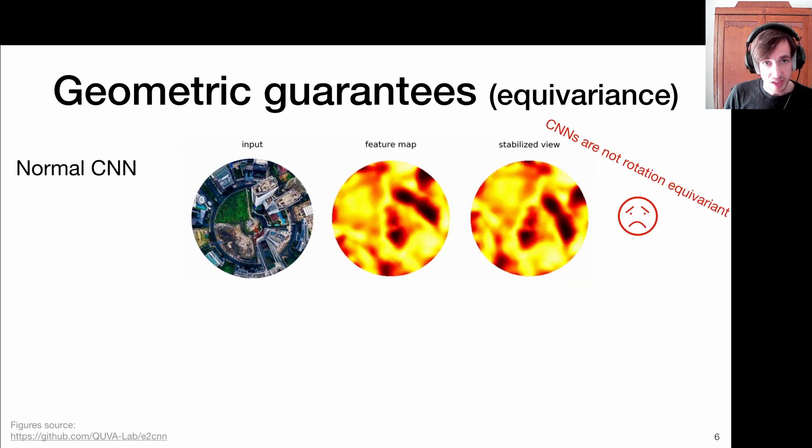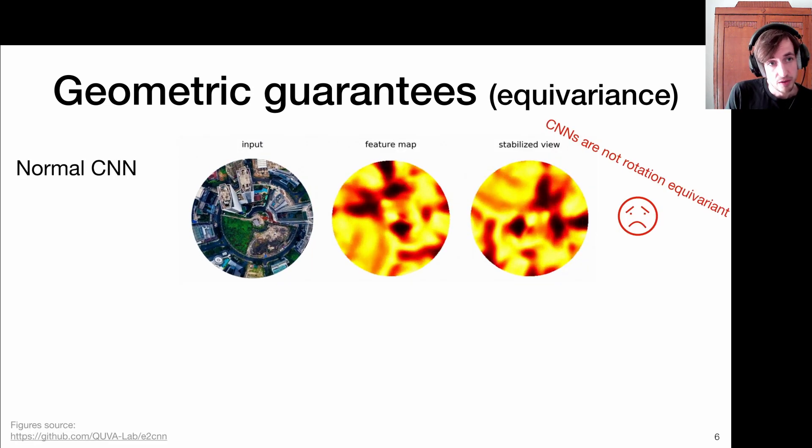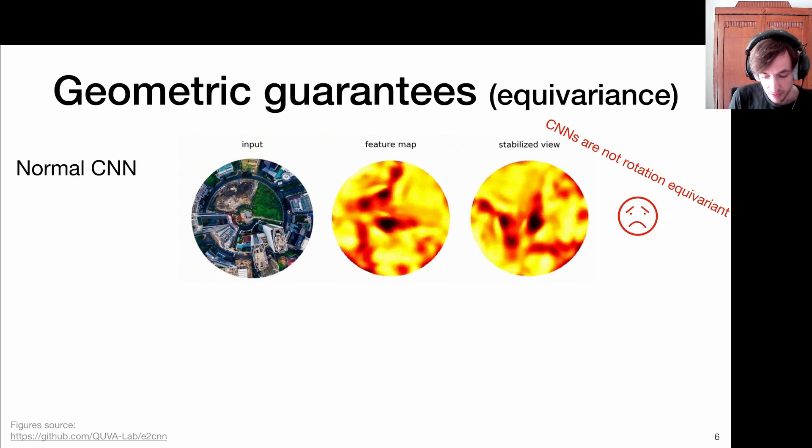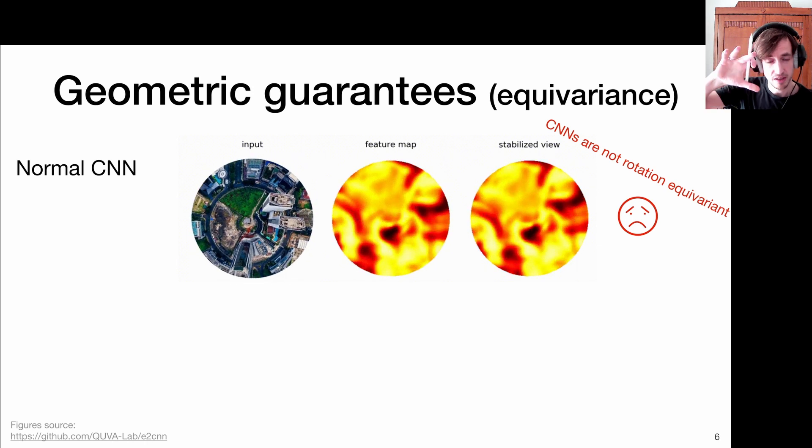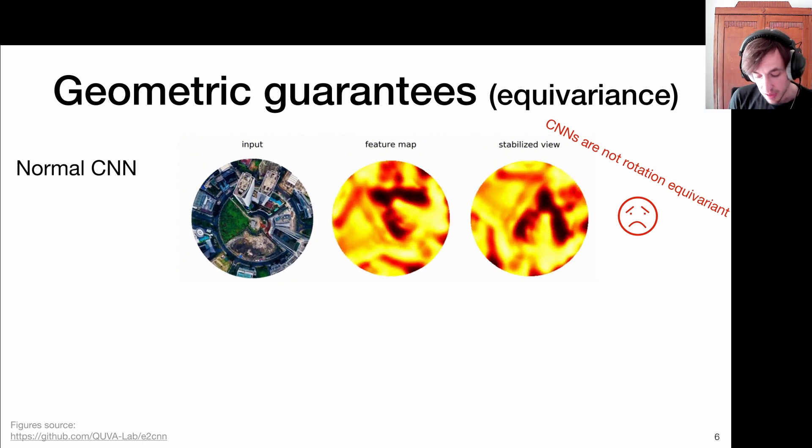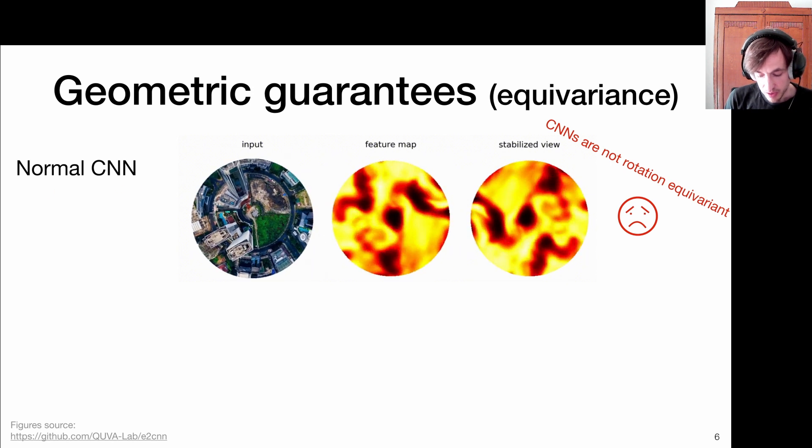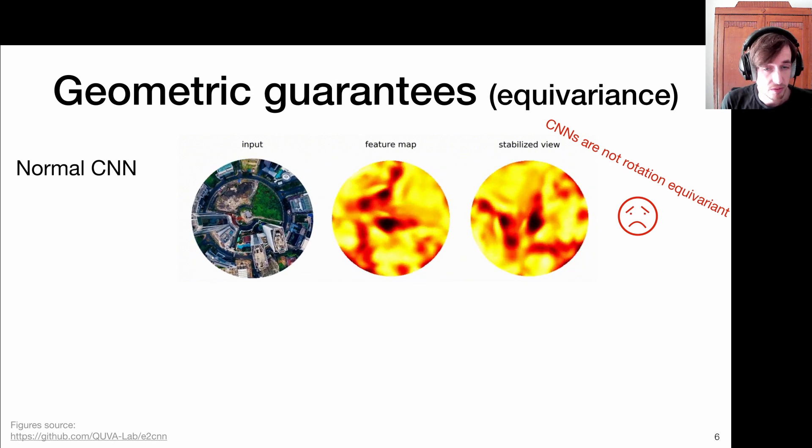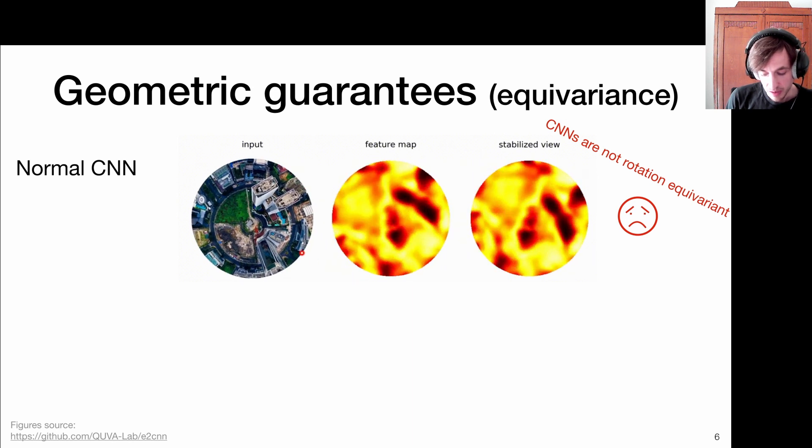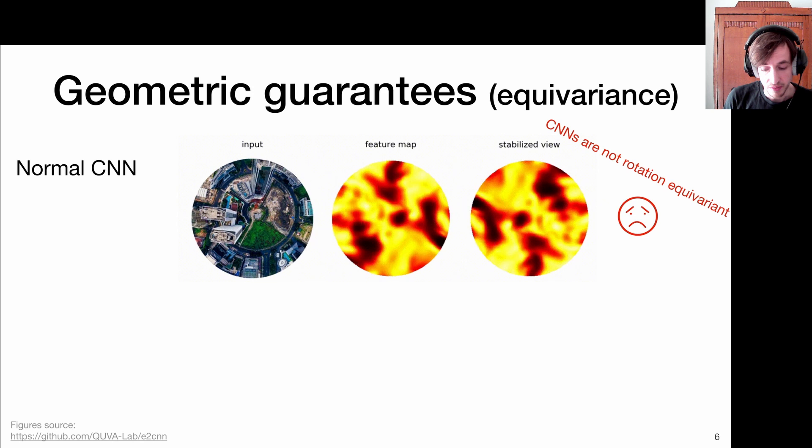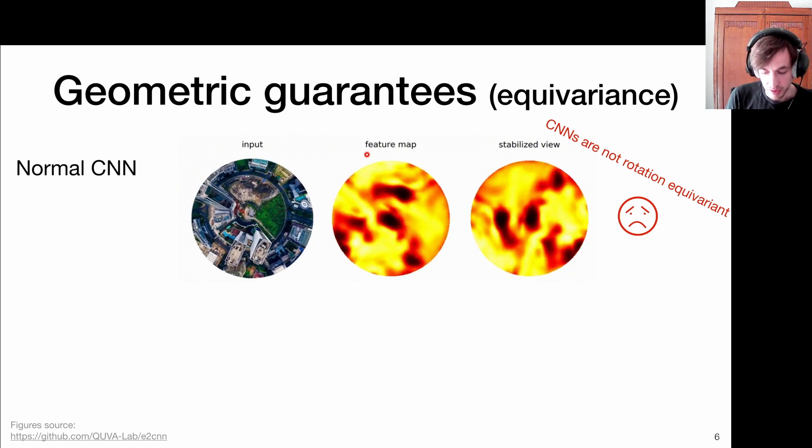Let's get back to what we know. Normal CNNs or convolutions are not equivariant to rotations. Consider this image, an aerial image of a part of a city, and let's rotate it. We have a trained neural network which picks up some features relevant for some downstream tasks. But if I rotate this aerial plane, the feature maps completely change. Apart from the entire rotation of it. Here we have the stabilized view.